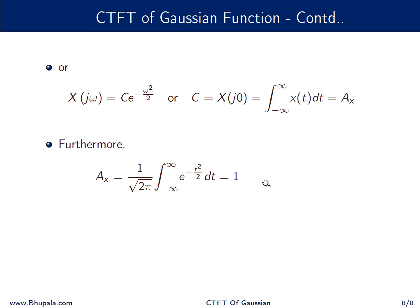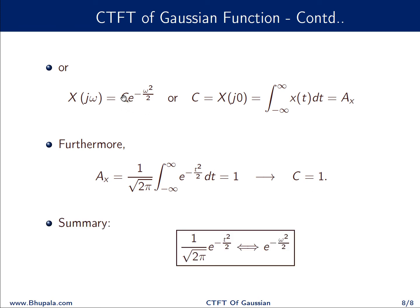To evaluate C, we set ω = 0, giving X(j0) = C. But we have already seen that X(j0) is the area of x(t). We previously proved that the area of this Gaussian function equals 1, so C = 1. Therefore X(jω) = e^(−ω²/2). In summary, we have proved that the Fourier transform of this Gaussian function is also a Gaussian function. Hopefully this helps — thanks very much for your time.